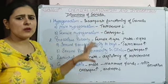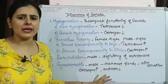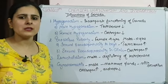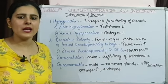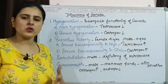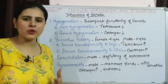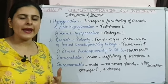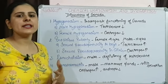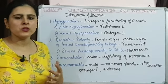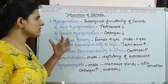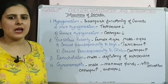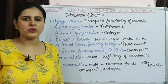We are left with some more endocrine glands to discuss — the gastrointestinal gland, the heart, which also releases some hormones, and the placenta. We are going to discuss these glands in our next class. That's all for today.